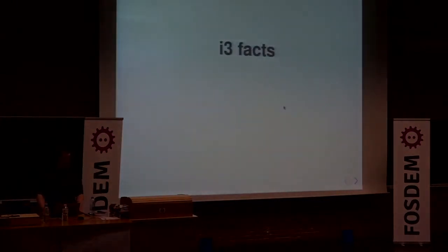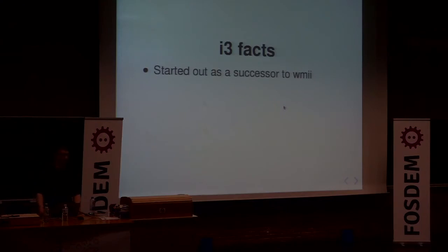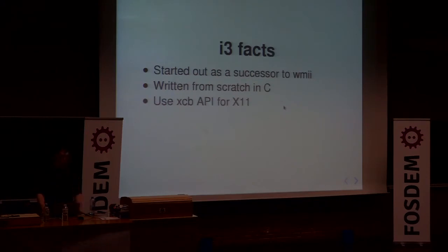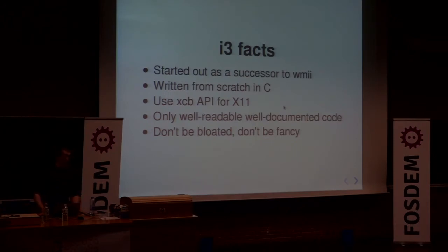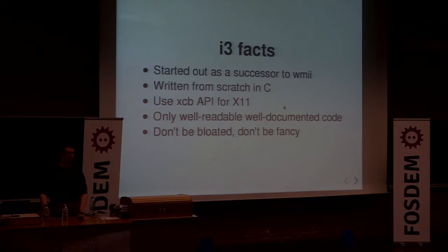Before I do a little demo of i3 — sorry to those who already use it, you probably know how it works. Some i3 facts: it started out as a successor of WM2. It's written from scratch in C, uses XCB as an API for the X server. One core principle is only accepting well-readable and well-documented code. Another core principle — the most important to me — is don't be bloated, don't be fancy. This can trigger passionate discussions on GitHub when people want their PR or feature request accepted and sometimes they're not. But it's a good principle because when you upgrade i3, it's going to remain the same core i3 we like.